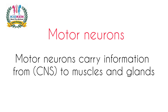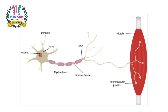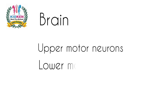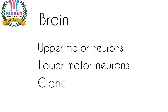Motor neurons carry information from the central nervous system to muscles and glands. The work of motor neurons is to take the primary message from the brain and deliver it to our cells. It comes first from the brain via the upper motor neurons, then from the lower motor neurons, then to the cells, from the soma, and through the axons to our glands.